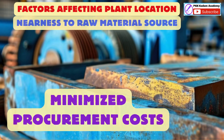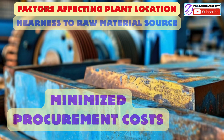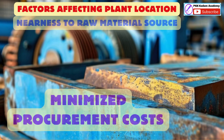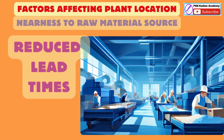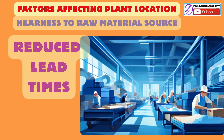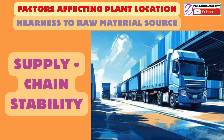Nearness to Raw Material Source: Minimized Procurement Costs — locating the plant near raw material sources can minimize procurement expenses, reducing overall production costs. Reduced Lead Times: Proximity to raw materials shortens lead times, ensuring a steady and timely supply for the production process. Supply Chain Stability: Being close to raw material sources stabilizes the supply chain, reducing the risk of production disruptions due to material shortages.